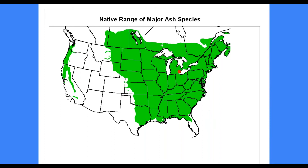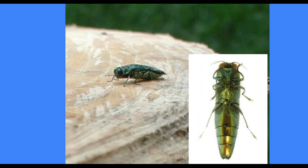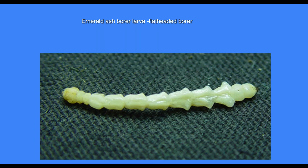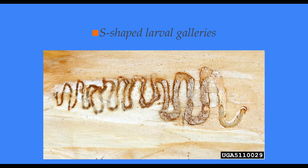The light green on the map shows the native range for all Fraxinus species. The red dot shows where it was first found in Michigan, and you can follow how it spread from there. It's a spread-rate map showing how quickly this insect moved out from where it was first identified. The larvae are flat-headed borers with distinctive bell-shaped curves at the end of the body — this is the stage that kills the tree. It eats underneath the bark, killing the phloem and cambium layer, creating an S-shaped or serpentine gallery as it feeds.